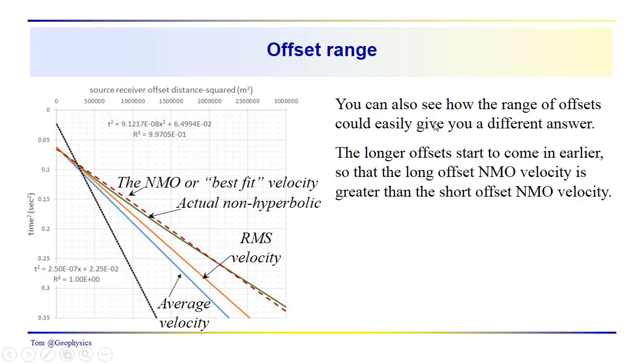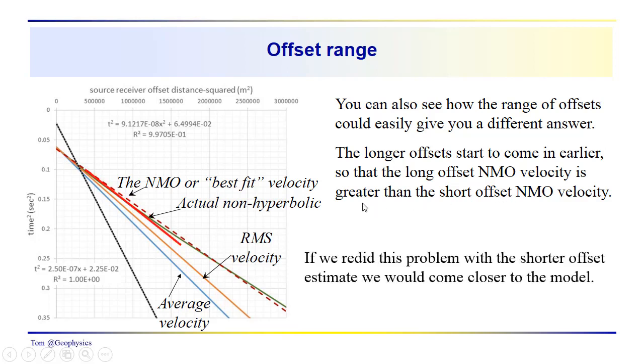So as we noted, the range of offsets is going to affect your answer; the longer offsets start to come in earlier, so that the long offset NMO velocity is greater than the short offset NMO velocity. If we redid the analysis using only the shorter offsets, we would come up with an answer a little bit closer to that of the model. So again, average velocity less than the RMS velocity, less than the NMO velocity, general relationship.